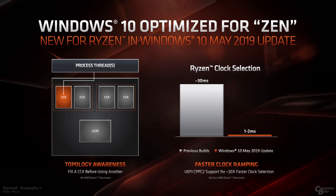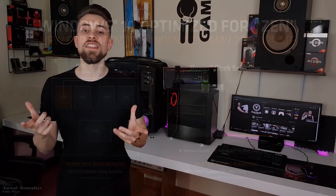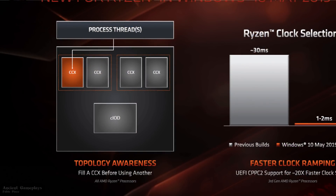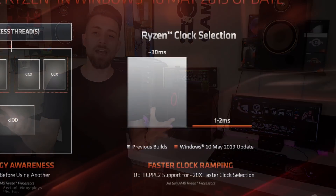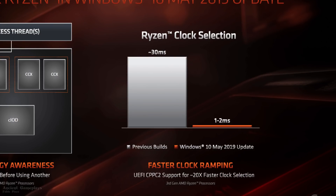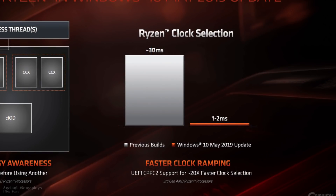The first improvement is the scheduler on Windows 10, which would be improved to first fill a CCX before sending information to others. So imagine using a game that uses only four cores — it would work only on one CCX, improving latency, instead of sending half the information to one CCX and half to another, which would cause latency. We also have the clock change latency reduced from 30 nanoseconds to one or two nanoseconds, and that makes a difference.